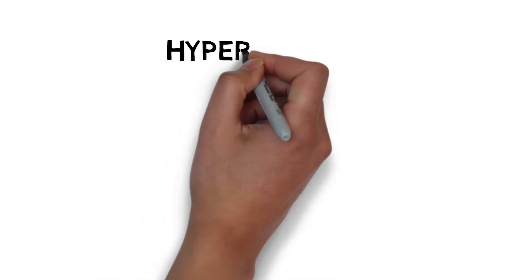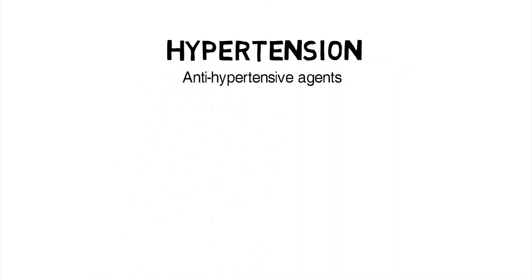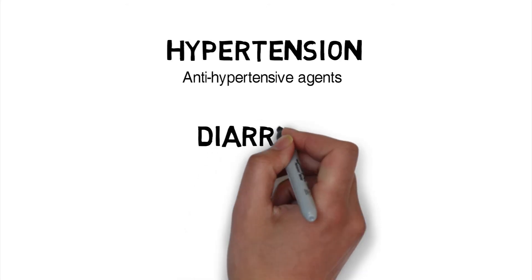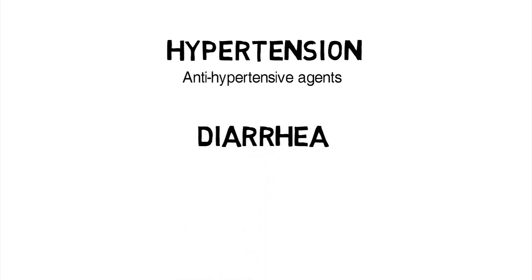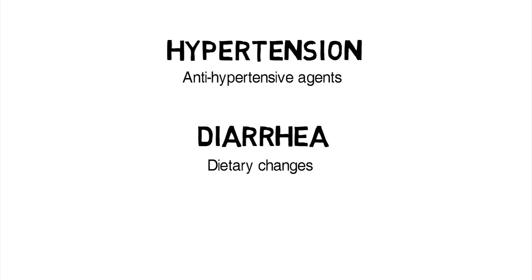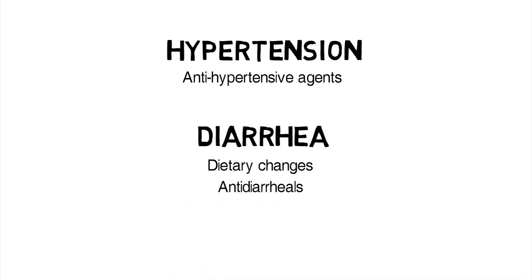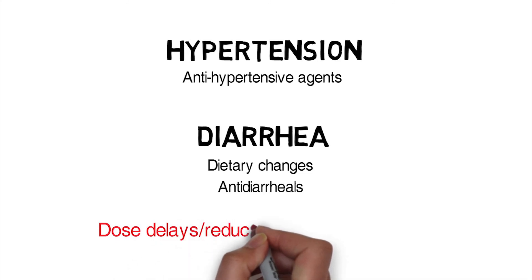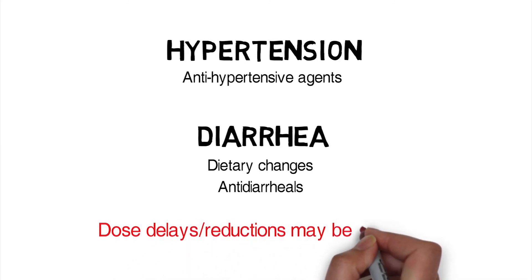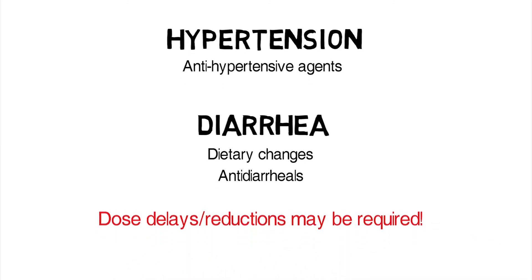Hypertension can be managed with antihypertensive agents. And diarrhea, which sometimes can be a dose-limiting toxicity, should be managed proactively with dietary changes as well as anti-diarrhea drugs. In addition, patients may often require dose delays and dose reductions to help manage these side effects.